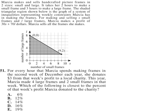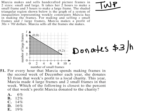Question number 51 says: for every hour that Marcia spends making frames in the second week of December each year, she donates $3 from that week's profit to a local charity. Let's write this information down. This is a translate word problem question, so TWP. The strategy with translating word problems is to really break down the quantitative information and write things down to keep up with all the information given. The first sentence tells us that Marcia donates $3 per hour.